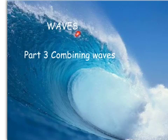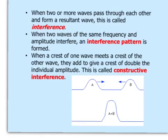Waves, Part 3: Combining Waves. When two or more waves pass through each other and form a resultant wave, this is called interference.